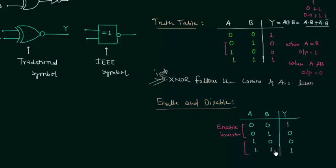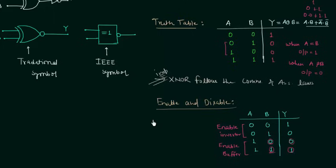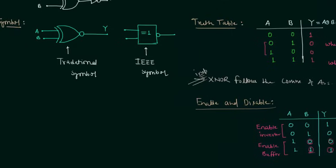For the last two cases when A is 1: Y is 0 when B is 0, and Y is 1 when B is 1. So we have an enable buffer because output Y equals B. We have already completed enable and disable for the other gates, so it is not difficult to find for the XNOR gate.